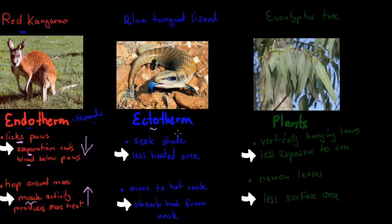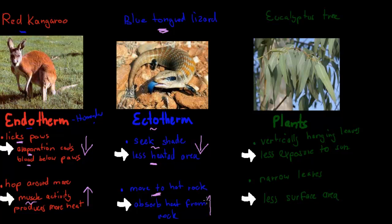The ectotherm is an animal that can't control its own temperature. 'Ecto' means outside, so whatever the outside or ambient temperature is, it will also be its internal temperature. An example is the blue tongue lizard. It can only use the environment to control its temperature. For example, it can seek shade — a less heated area — to reduce its body temperature when it's too hot. If it's too cold, it can move onto a hot rock, absorbing heat from it and thereby increasing its body temperature.